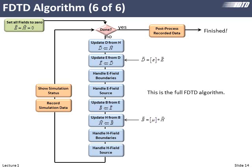We may also want to incorporate complex material properties, in which case we deviate from the basic E, H engine and instead update the D field from the H field, then update E from D. This update comes from the constitutive relation. All of the complex material properties are pulled out of Maxwell's curl equation and put into a much simpler equation. Then we handle boundaries and source, update B from E using the other curl equation, and go back to the constitutive relation to update H from B — so all the magnetic material properties get lumped into that simpler equation. It's really still the same E, H iteration, but with more bells and whistles.